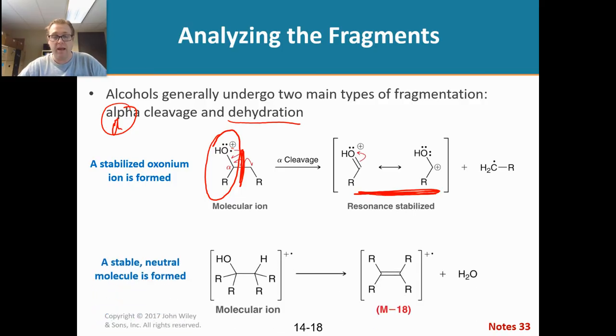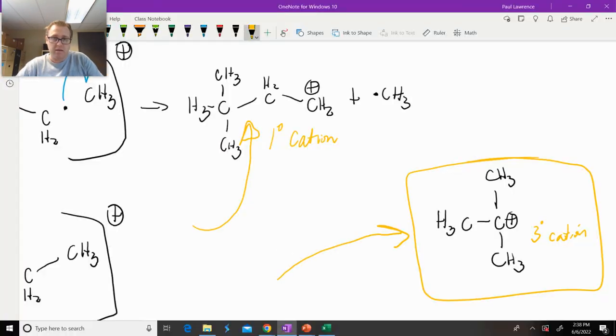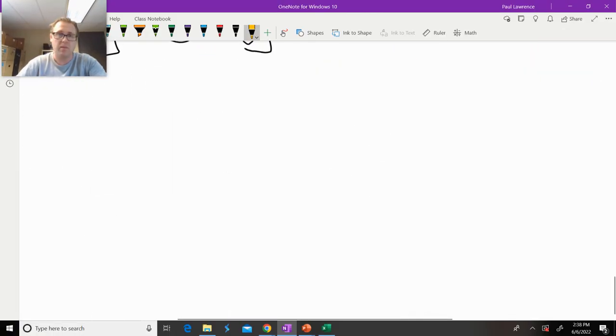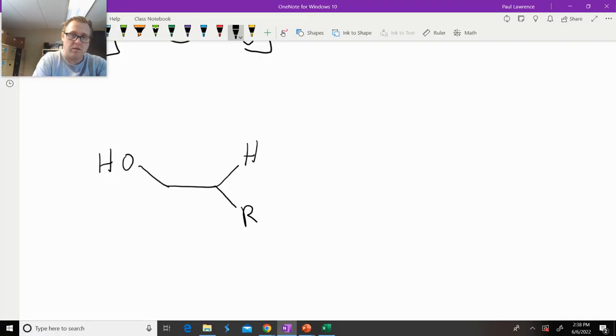Another way alcohols fragment is dehydration. So what we're doing is we're losing water at the end of the fragmentation. So what's happening here, I want to draw the mechanism of how this is occurring. And I'm going to come to the whiteboard.